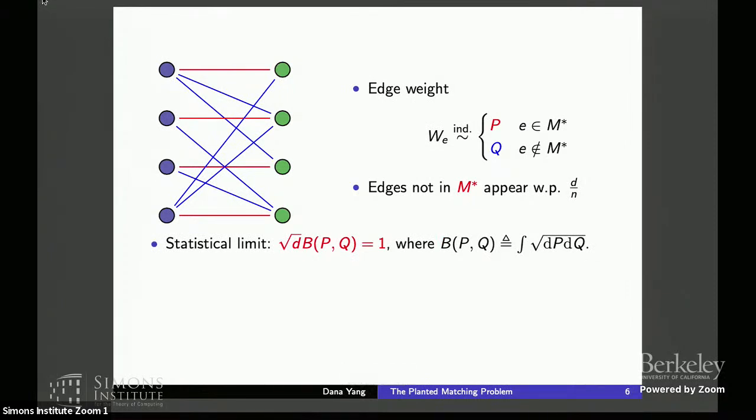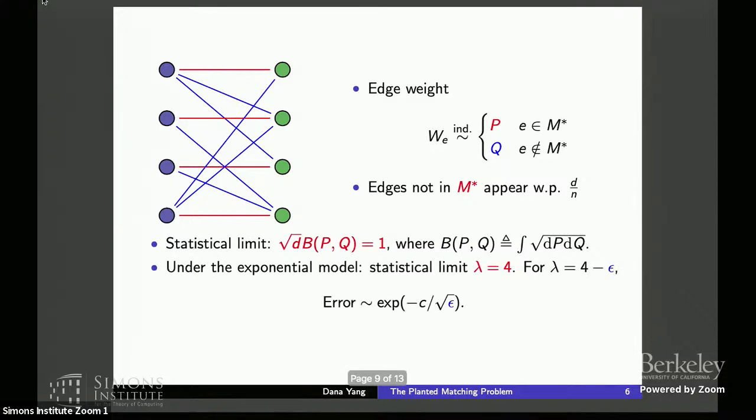And we show that the statistical limit for the recovery problem here depends only on the average degree D and the Bhattacharyya coefficient, also known as the Hellinger affinity between P and Q. And in the special case where the edge weights are exponential and you have a complete graph, this statistical limit collapses to lambda equals 4, which is attained by the minimum weight matching.